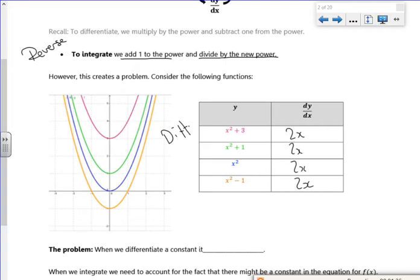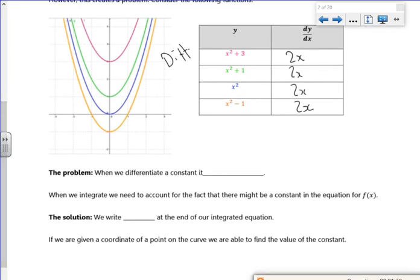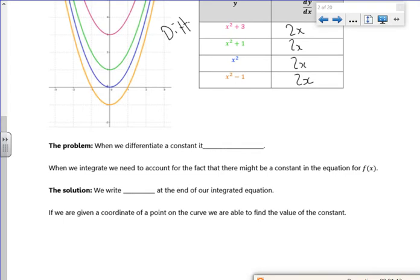Because if I want to go back, I can take the 2x back to the x squared, but I don't know what the constant is. I don't know what the number was. So I'll lose that information. And this is what this little bit here says. So the problem is when we differentiate, the constant disappears.